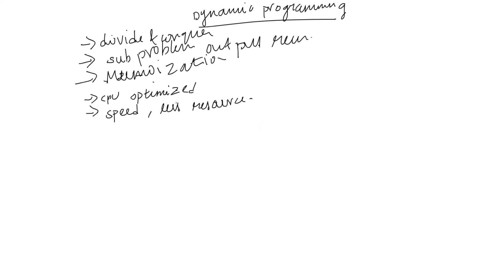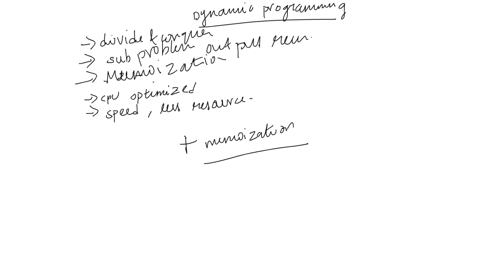So this is the dynamic programming concept. When we are using dynamic programming, we can use divide and conquer plus the memoization concept. So dynamic programming equals divide and conquer concepts plus memoization — and that is more than just divide and conquer alone.